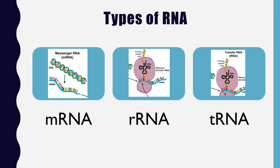There are three types of RNA involved in copying the DNA sequence and creating proteins. First, messenger RNA (mRNA) carries information from DNA to the ribosomes. The ribosomes, which include ribosomal RNA (rRNA), make up part of the machinery used to make proteins. Transfer RNA (tRNA) carries individual amino acids to the ribosome, where they are joined by peptide bonds to make that protein. Proteins are made up of amino acid chains that fold into their functional form.